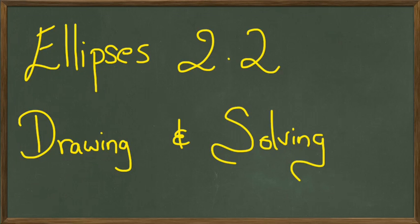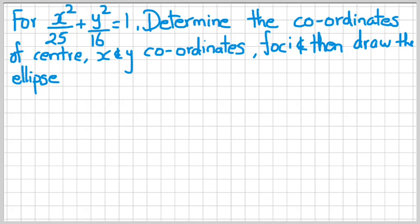Hi folks, we're going to be covering drawing and solving ellipses. Here's a question: x² divided by 25 plus y² divided by 16 equals 1. Determine the coordinates of the center, x and y coordinates, foci, and then draw the ellipse. First step, we're going to draw ourselves a set of axes. We know the center is going to be at (0, 0) because of x² and y².